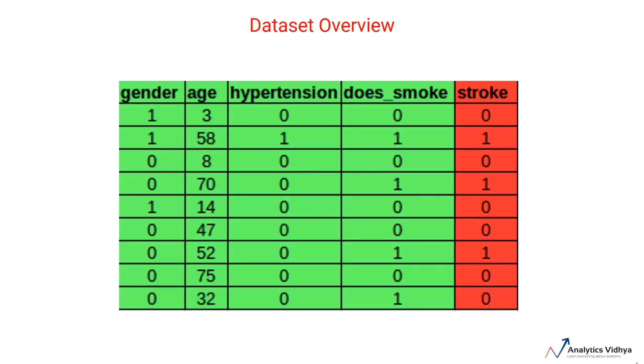This is the dataset which we'll be using for this video. This dataset has four independent features represented by green and a dependent feature represented by red. For the sake of simplicity, let's focus on the first row and try to understand forward propagation with this single row input.